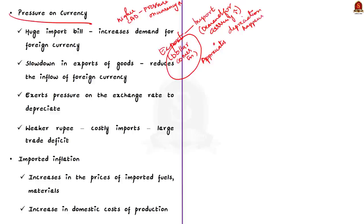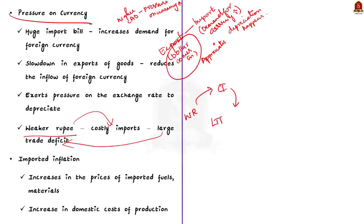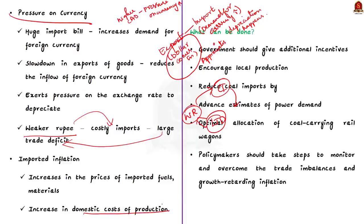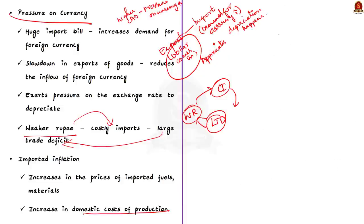According to the editorial, a weaker rupee in turn makes imports costlier, potentially widening the trade deficit and triggering a vicious cycle. There is also the concern of battling imported inflation, as global commodity prices remain sharply elevated. Increases in prices of imported fuels, materials and components raise domestic costs of production, leading to increases in the price of domestically produced goods as well — this condition is called imported inflation. Imported inflation may be set off by foreign price increases or by depreciation of a country's exchange rate.